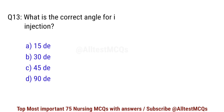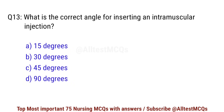Question number 13. What is the correct angle for administering an intramuscular injection? Right option is D: 90 degrees.